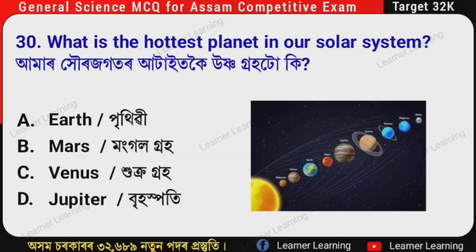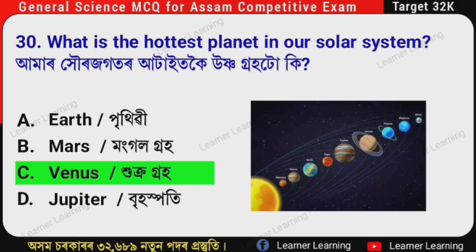Next question: What is the hottest planet in our solar system? (Assamese: Amaar hori jogotar atait koi uusna grhohta ki?) The correct option is Option C — Venus. Venus (hukra grho) is the hottest planet in our solar system.